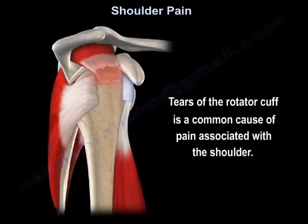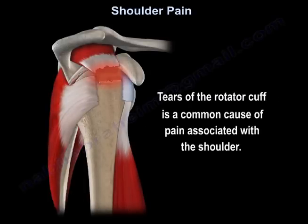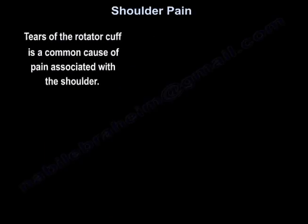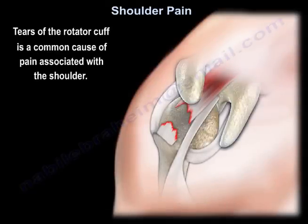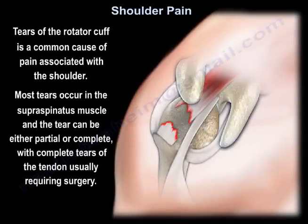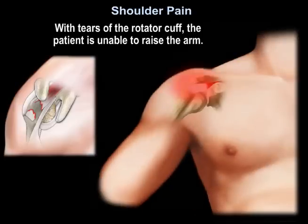Tears of the rotator cuff are a common cause of pain associated with the shoulder. Most tears occur in the supraspinatus muscle and they can be either partial or complete, with complete tears of the tendon usually requiring surgery. With tears of the rotator cuff, the patient is unable to raise the arm.